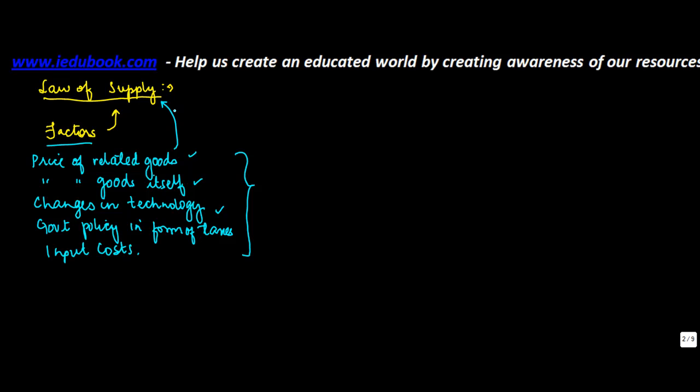The law of supply, coming back to it, which is the main topic, says that other things or rather other factors—when I say other factors, I am referring to the price of related goods, changes in technology, government policy, input cost, etc.—so this says other factors or other things remaining the same, which means that all of them do not affect supply.